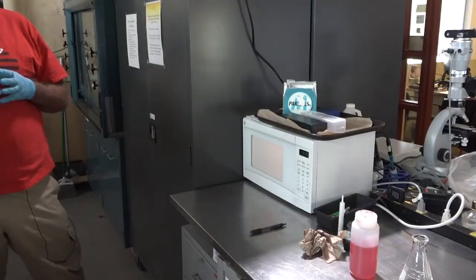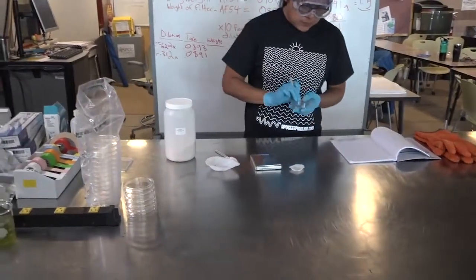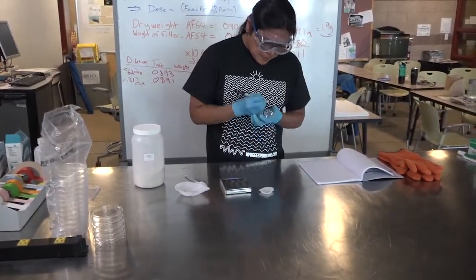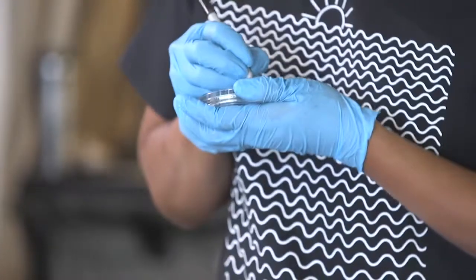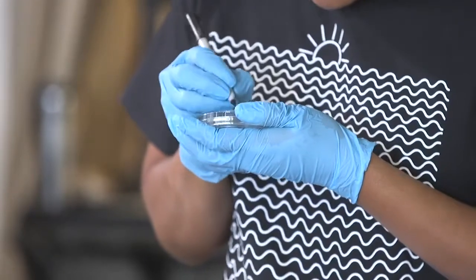Before you pour a plate, you'll have to put the label on it so you know what's in the plate. On the bottom, around the edge, you'll write the date, the media that you've put in there, in this case BG11.